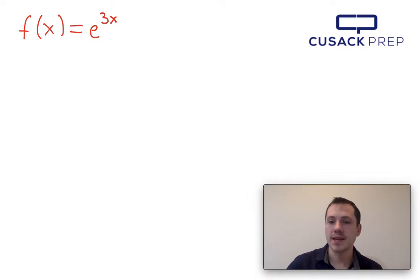Now e to the 3x, you have a function within a function here, so it's the case where we're going to have to use the chain rule. The larger outside function is this exponential function and the smaller function is this 3x.